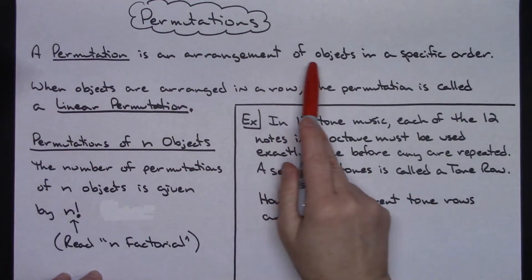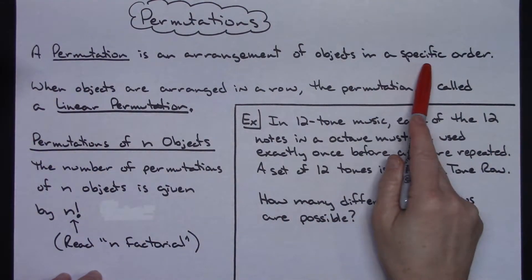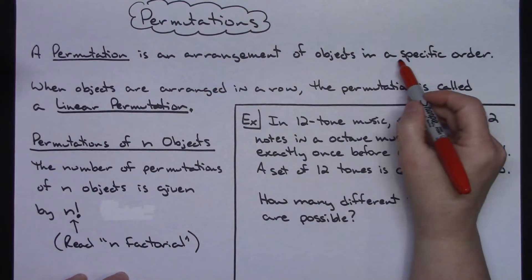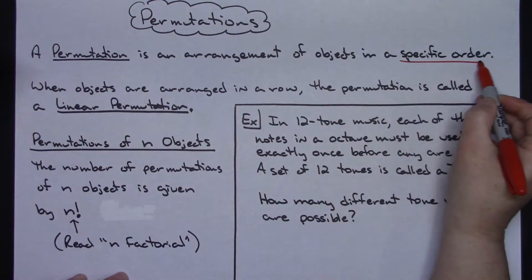A permutation is an arrangement of objects in a specific order. That's the number one key thing that you want to remember about permutations—they are in a specific order.